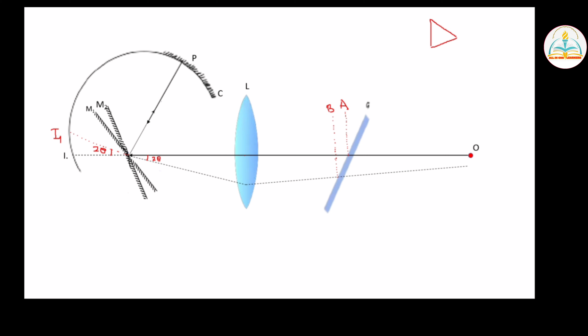Suppose this is point A and this is point I. This is R, the radius of curvature. The distance from the center of curvature is adjusted with respect to this radius of curvature. This figure gives us the size and the calculation for the geometry.